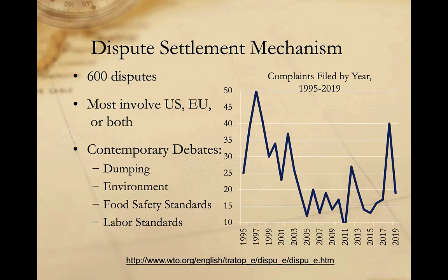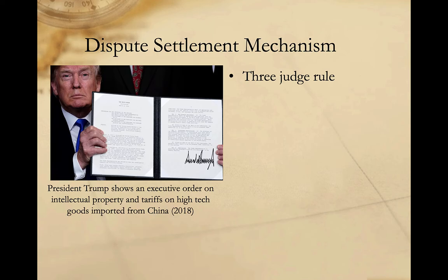While the dispute settlement mechanism functioned reasonably well, it has been subject to some criticisms. The US government asserted the organization was biased against the United States, despite winning more cases on average than other countries. Developing countries often claimed the mechanism was biased against them, since countervailing tariffs privilege larger economies. But perhaps the most dramatic development was the Trump administration's decision to block the appointment of new judges to the appellate body. By permitting current judges' terms to expire, the US effectively depopulated the pool of available judges, and by December 2019 only one judge remained, meaning the WTO could no longer hear any cases.